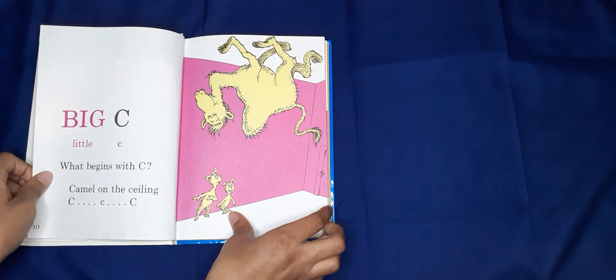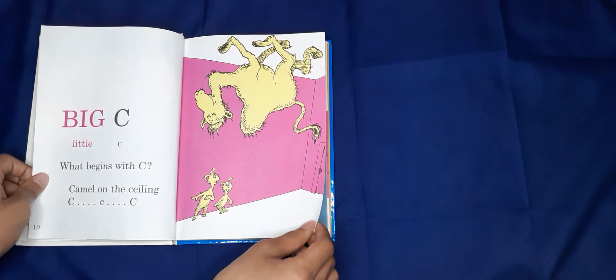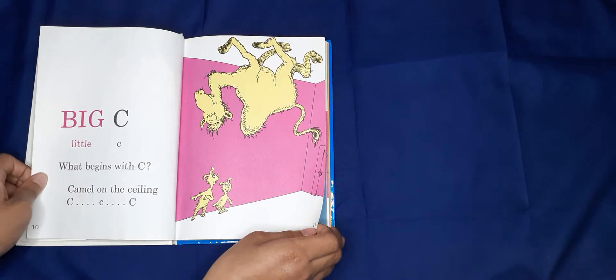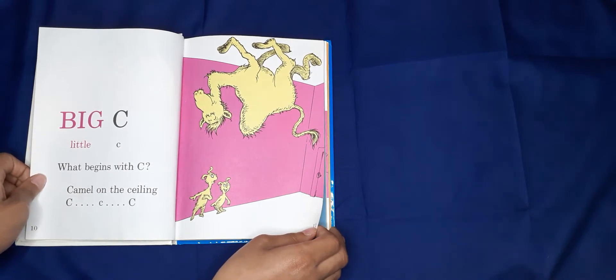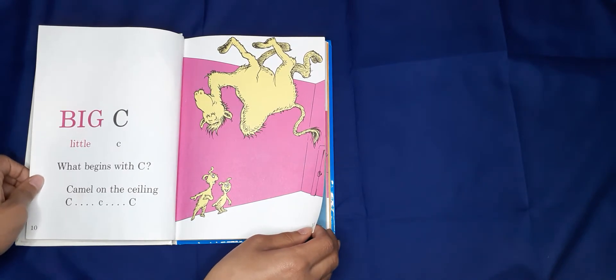Big C, Little C. What begins with C? Camel on the ceiling? C, C, C.